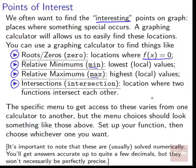The specific menu to get access to these varies from one calculator to another, but the menu choices should look something like these: zero, min, max, intersection. If you can find a section like that, you've found the part where you can get that information out of your calculator. You set up your function, then choose whichever one you want to use.